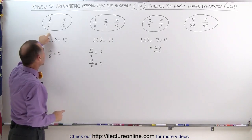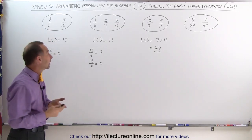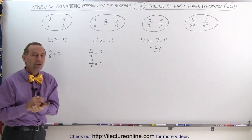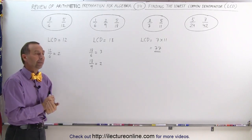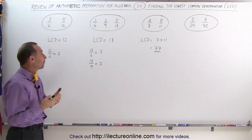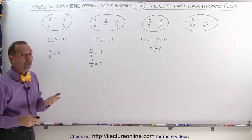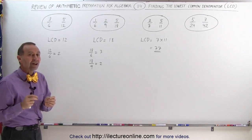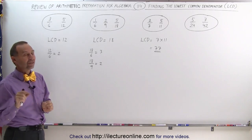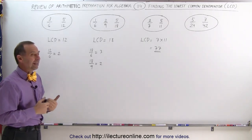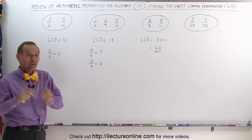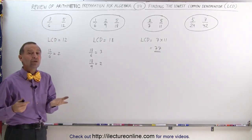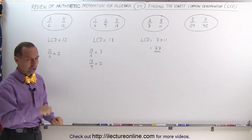Going back to the earlier example, could we have found the LCD by multiplying 6 times 12, giving us 72? Well, 72 would be a common denominator, but not the lowest common denominator. It is perfectly fine to use a common denominator — it doesn't have to be the lowest one — and we could still use it to add or subtract fractions. Although it's easier when you find the lowest common denominator, because then the numbers you're dealing with are a lot smaller.